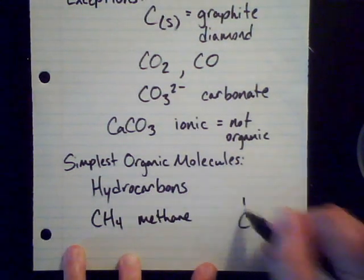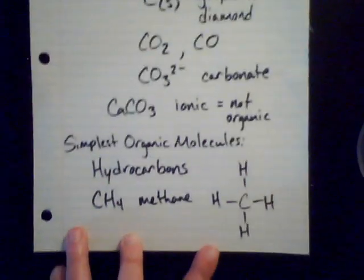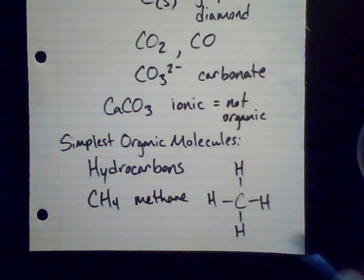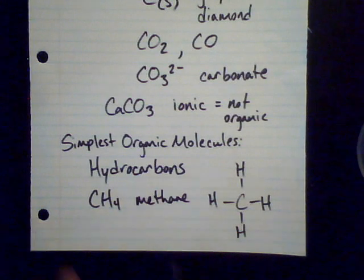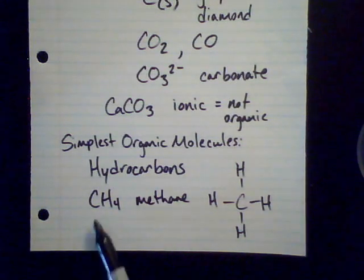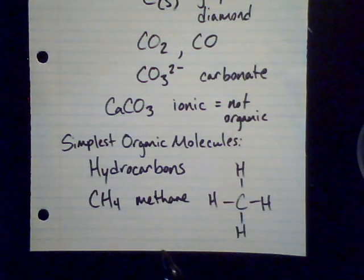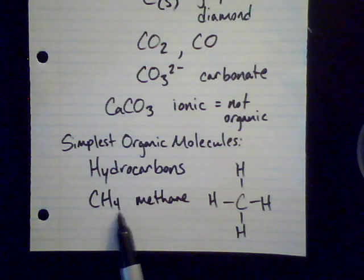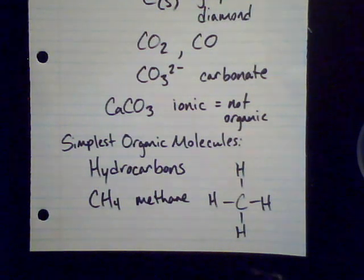If you draw the Lewis dot structure of methane, carbon wants to make four bonds. If those four things it's attached to are hydrogens, that gives us methane. This is a tetrahedrally coordinated molecule — it makes that four-sided pyramid. Now, if I named this like I would name nonmetals paired with nonmetals in covalent compounds, I would have named this carbon tetrahydride. But with naming in organic chemistry, we have an entirely different set of rules.